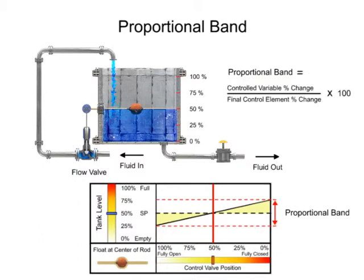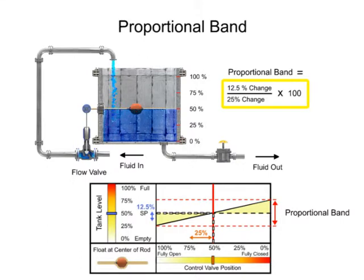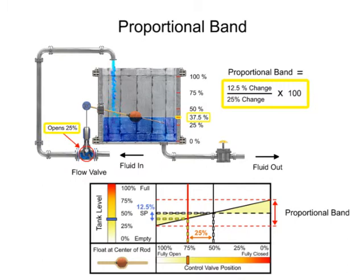By placing the float at the center of the rod, the fluid level has to change 12.5% to cause the final control element to change 25%. The width of the proportional band is reduced by half.